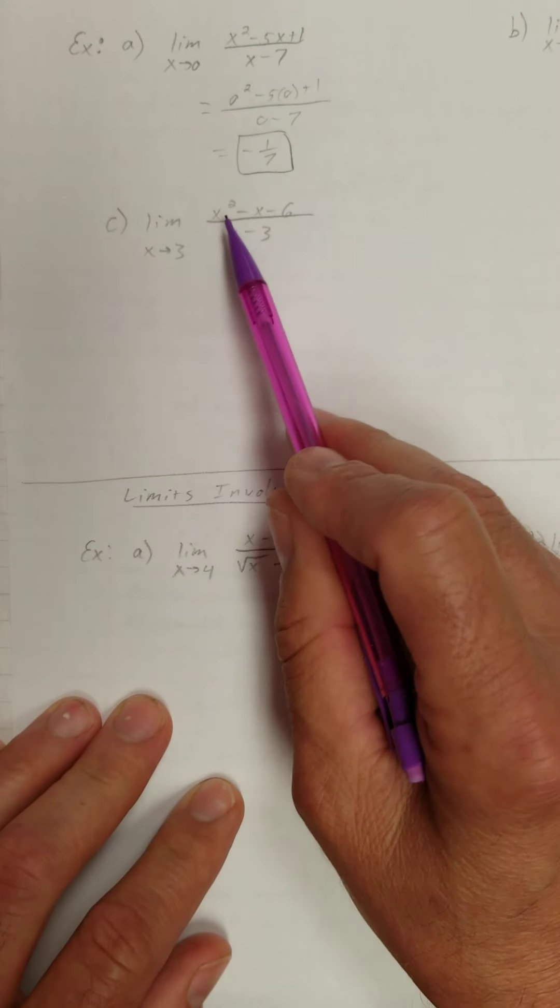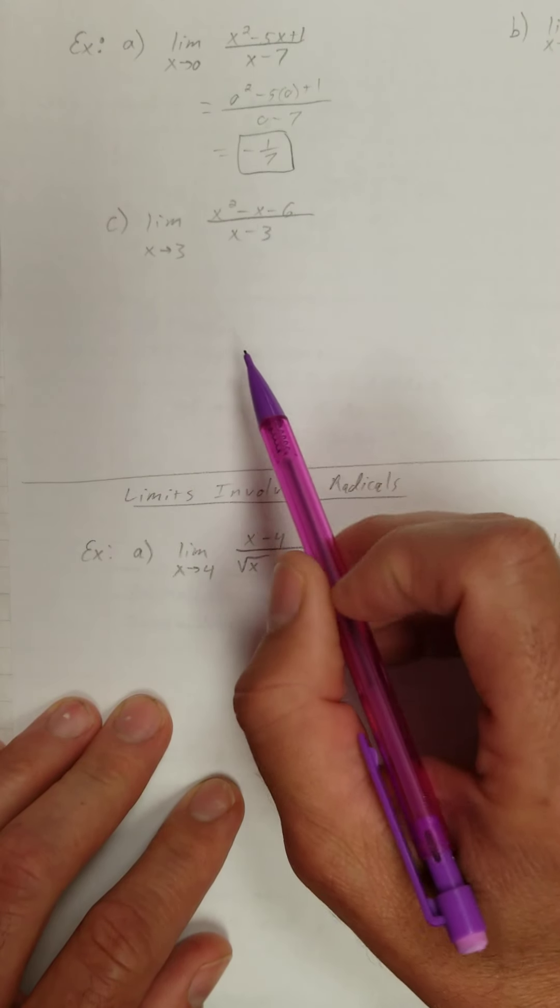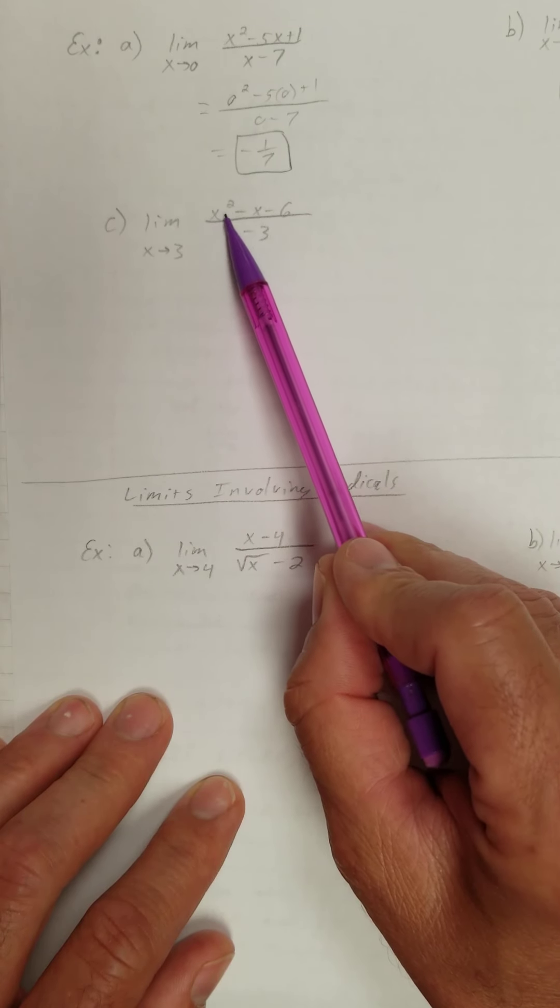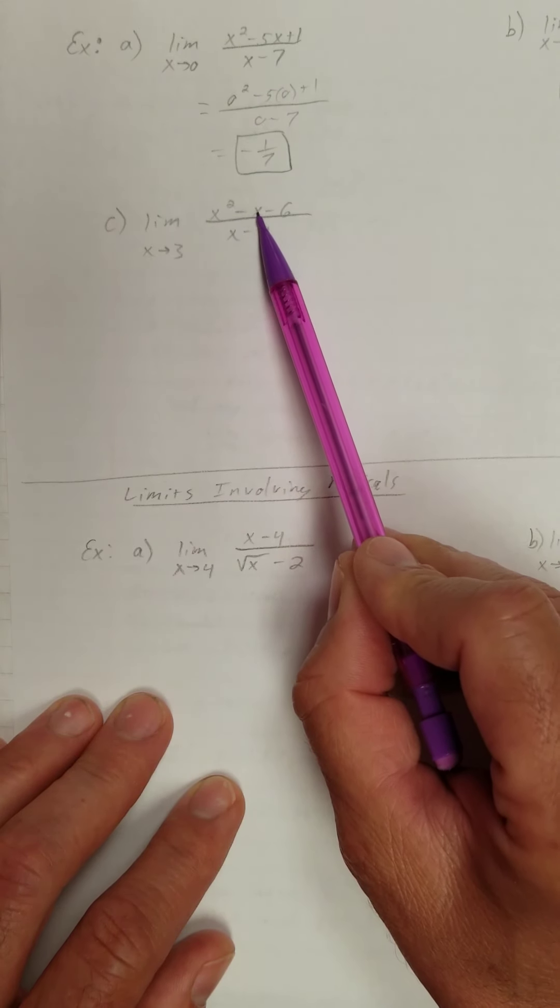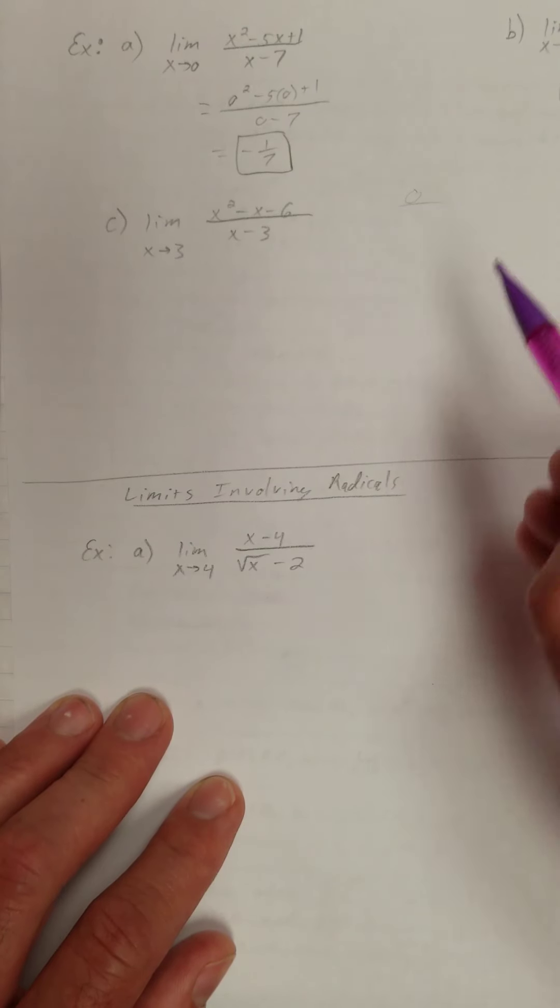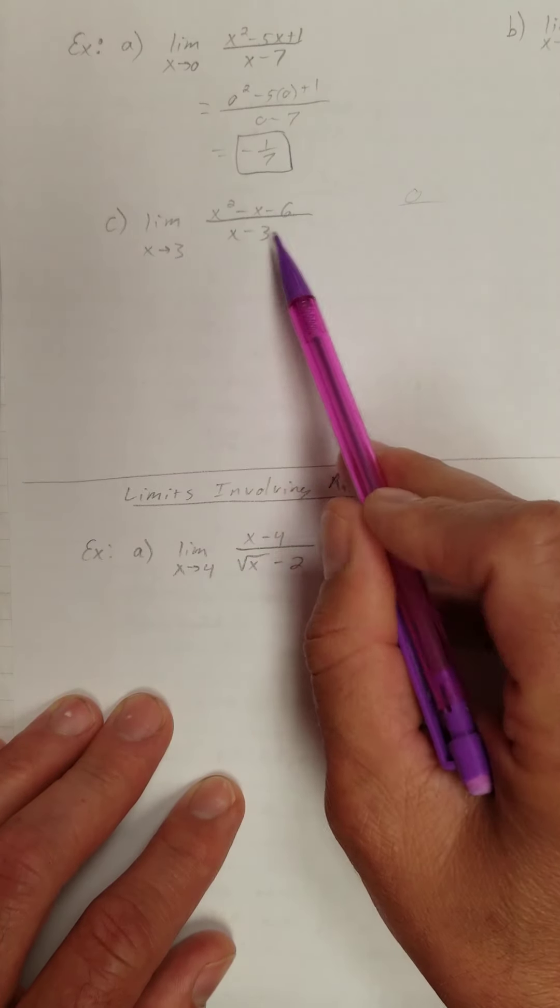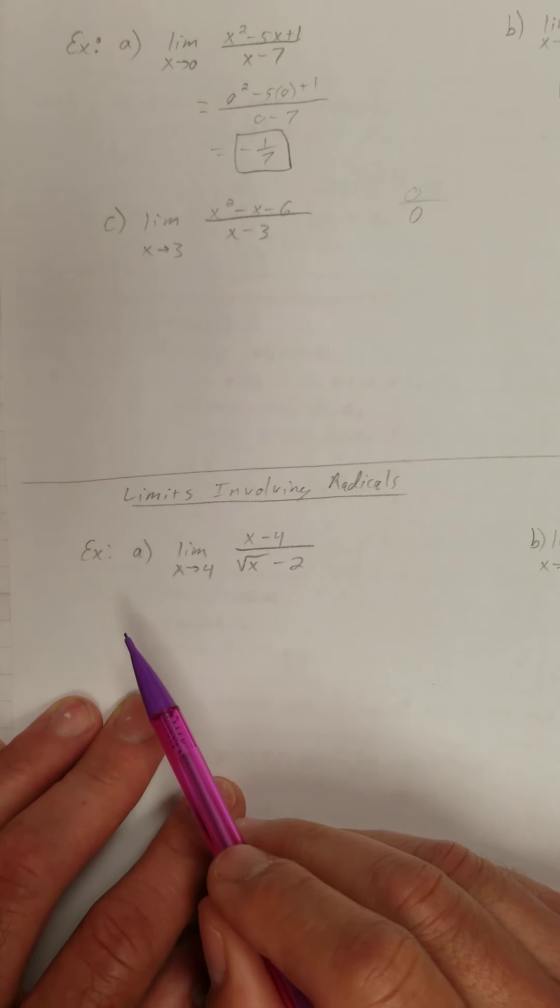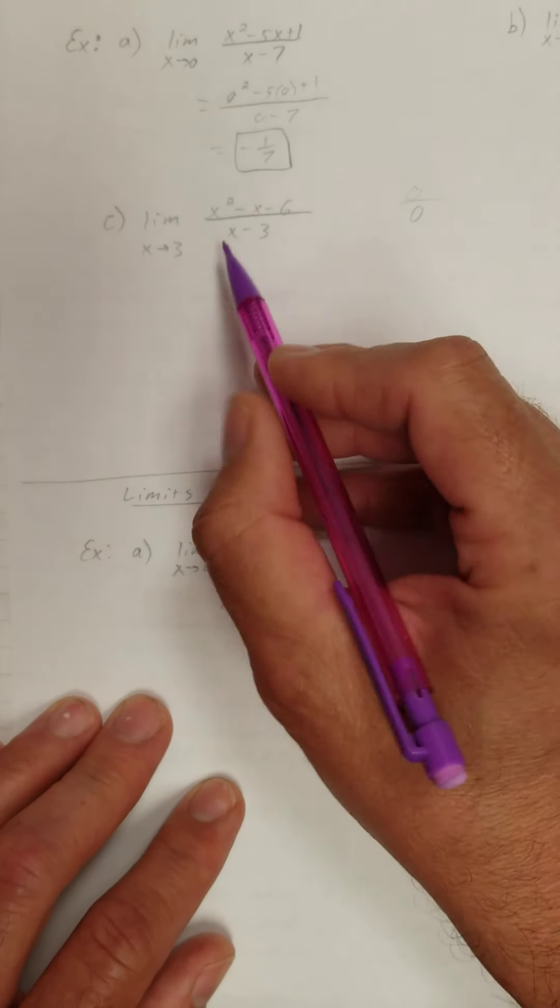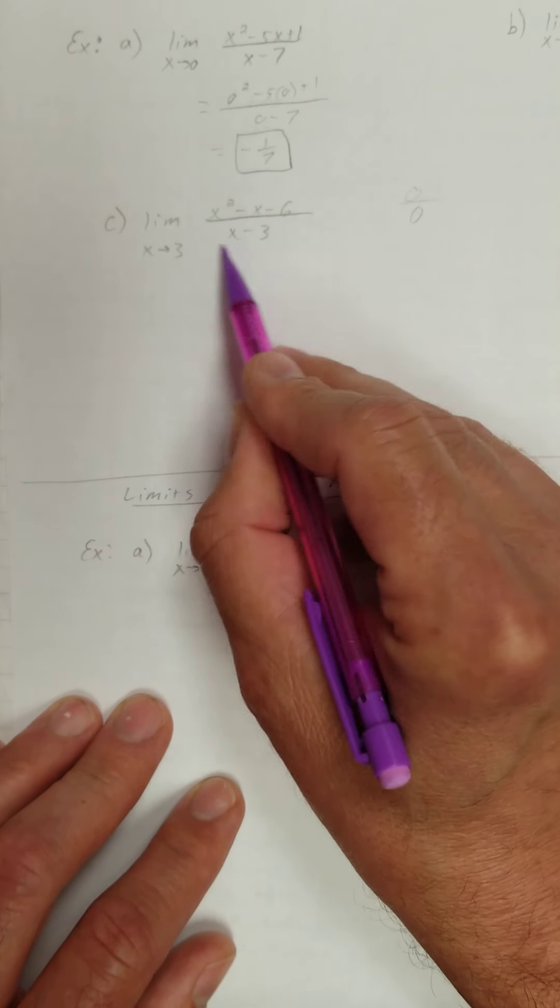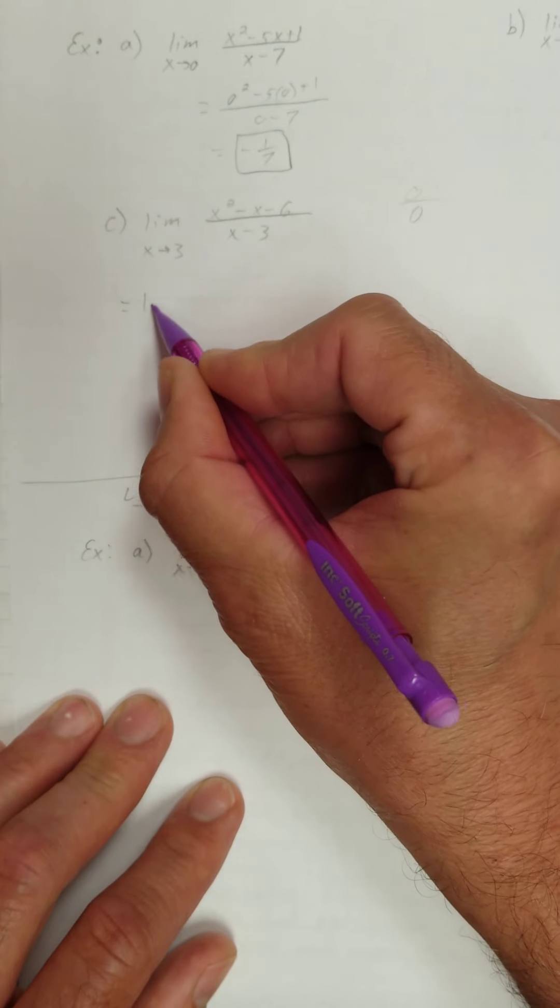How about this one? The limit as x approaches 3 of this rational function. What happens if I try to evaluate this at 3? I get 9 minus 3 is 6, minus 6 is 0, so the top is like 0, right? How about the bottom? That'll give me 0 as well, right? The third thing in that theorem said what? If they're both equal to 0, try to factor this thing. So I'm going to try to factor this.